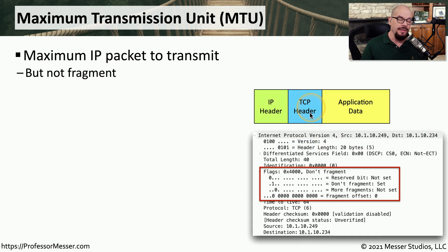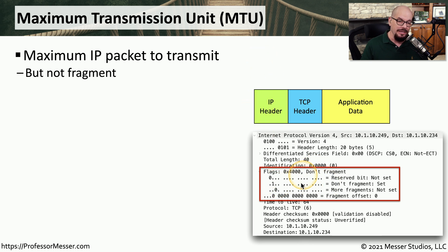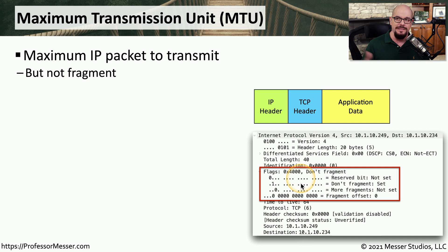Not only are there flags within the TCP or UDP header, there are also flags within the IP header — you can see an example of those flags right here. Most of the flags used at the IP header deal with the fragmentation of data. There may be times when you want to send traffic across the network, but because of the architecture or design of the network, you're not able to send packets that are very large. In those cases, you may need to fragment the data to be able to get through the smaller-size networks.